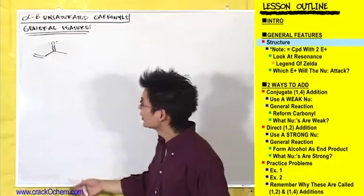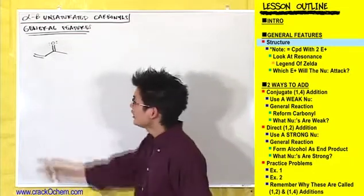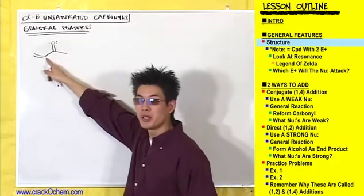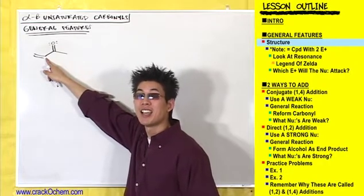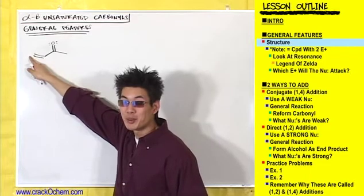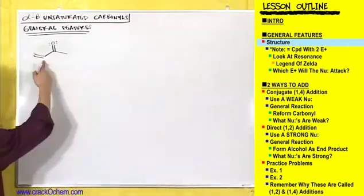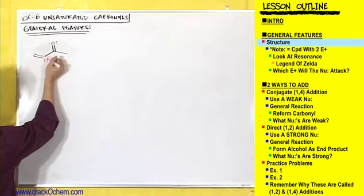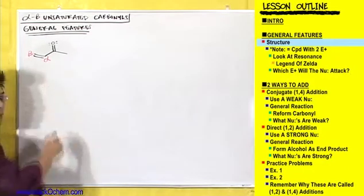So let's see what earned it this long complicated title. You've got a carbonyl. One carbon away from the carbonyl is called the alpha carbon. Two carbons away is known as the beta carbon.